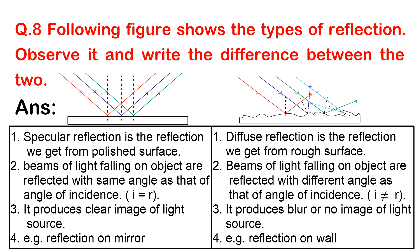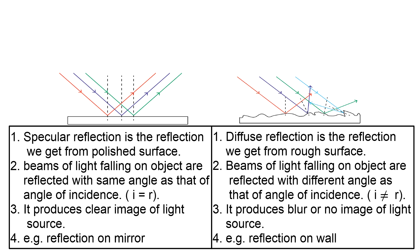Question 8: The following figure shows the types of reflection. Observe and write the difference between the two. 1. Specular reflection is the reflection we get from a polished surface; diffuse reflection is the reflection we get from an unpolished surface. 2. In specular reflection, beams of light are reflected with the same angle as the angle of incidence; in diffuse reflection, beams are reflected at different angles. 3. Specular reflection produces a clear image; diffuse reflection produces a blurred or no image. 4. Example: reflection on a mirror vs. reflection on a wall.